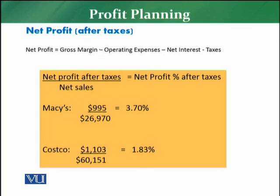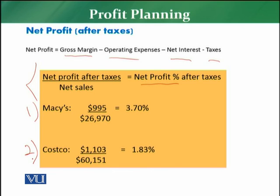Then we arrive at the final picture: net profit after tax. The calculation is: gross margin minus operating expenses minus interest minus taxes. Dividing net profit by net sales gives the net profit percentage. Mackey's earned a net profit of 3.70% and Costco earned 1.83%. So Mackey's was actually more profitable and Costco was less profitable.